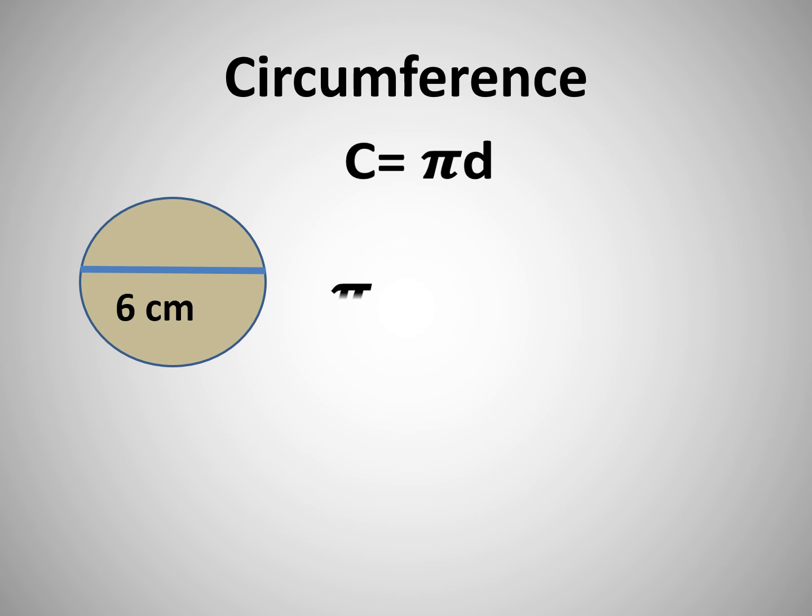C equals pi times diameter. So here's our diameter, it's 6 cm. So we're going to do that sum.